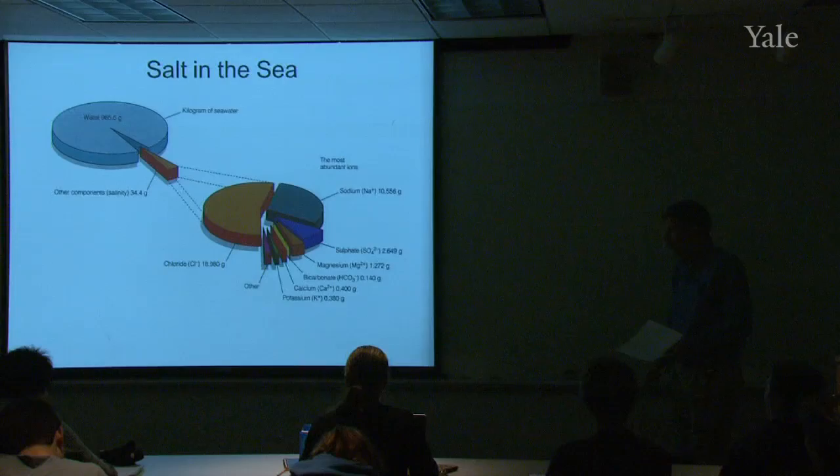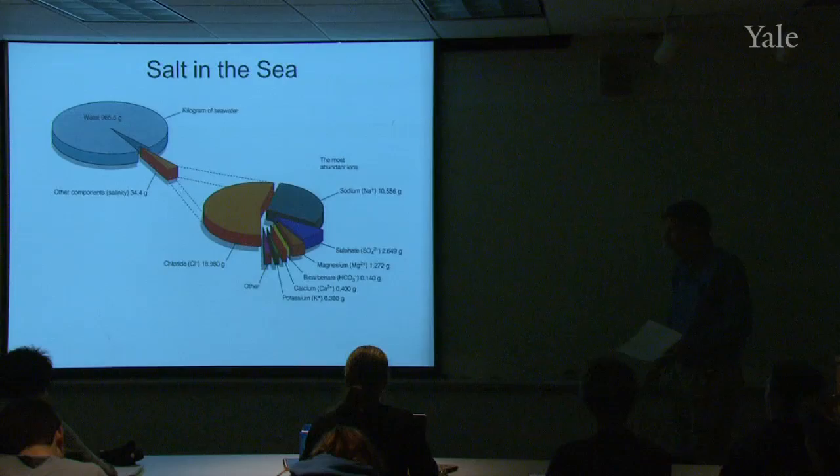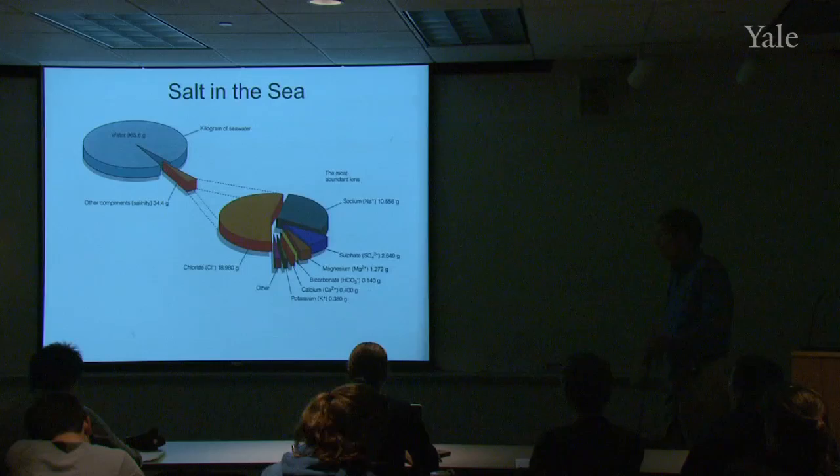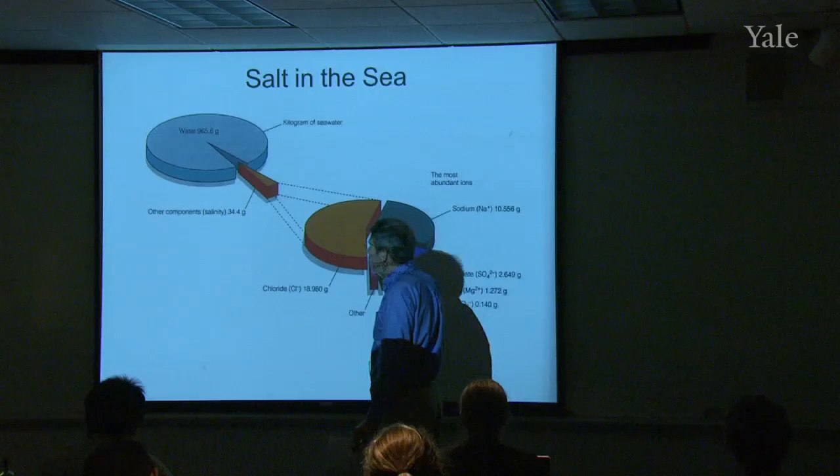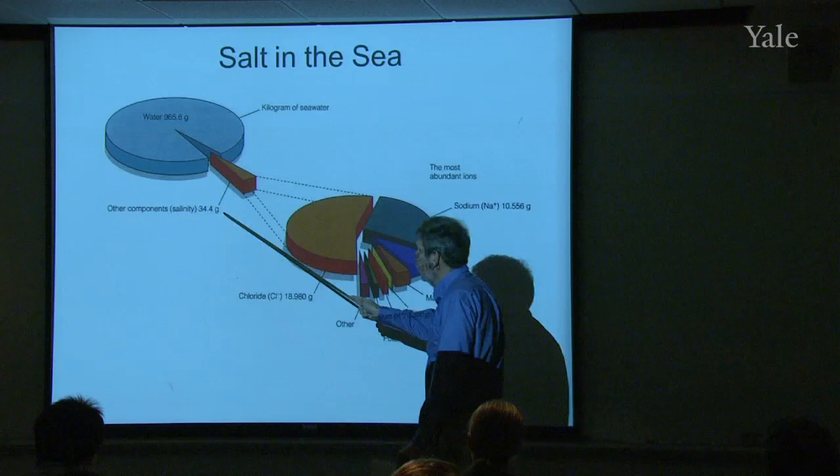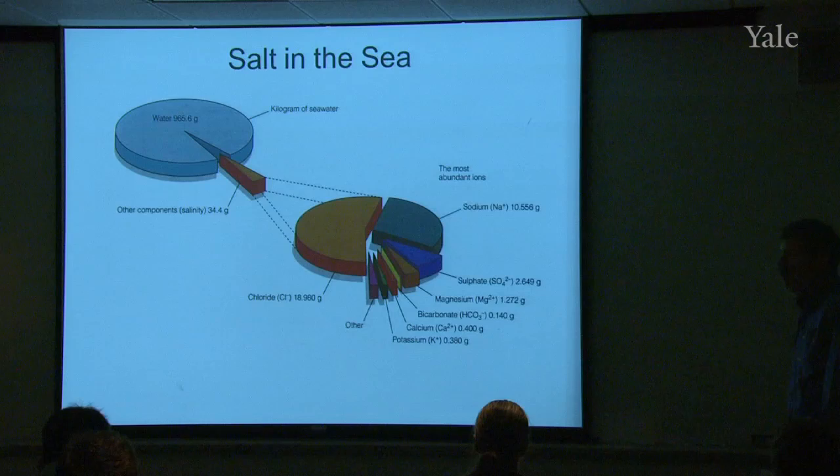Let's take a look at the salt itself. And this will connect a little bit with the lab that you're currently writing up. So if you take a kilogram of seawater, about 965 grams of that is water, H2O. And about 34.4 of that is in weight, in mass, grams is the salt. And then if you break up that little salt wedge into its chemical compositions, you get this little pie chart here.